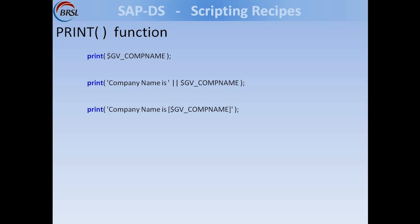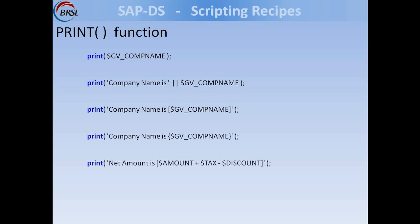Instead of using the concatenation operator, we can use string interpolation with square brackets. The value of the variable will be included within the main string, giving the result 'company name is coca-cola'. Whereas if you use braces, you get 'company name is' followed by single quotes around 'coca-cola'. So braces add single quotes on both sides of the variable value. We can also use expressions in string interpolation — for example, an arithmetic calculation like amount plus tax minus discount — and even library functions like toUpper, which converts the company name to uppercase letters.